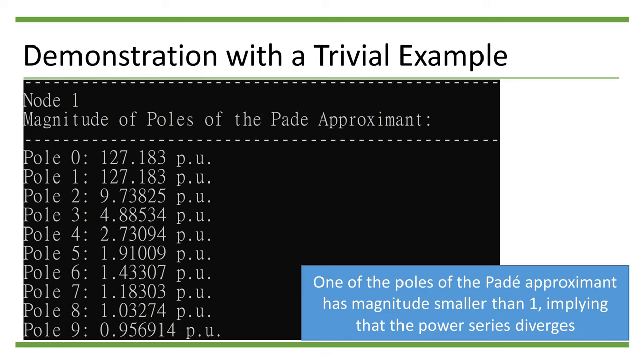Meanwhile, with 100 terms, the Padé approximant of the voltage still does not diverge, but there will be more poles whose magnitude is smaller than 1.